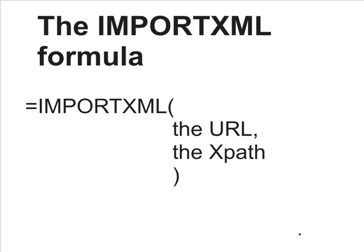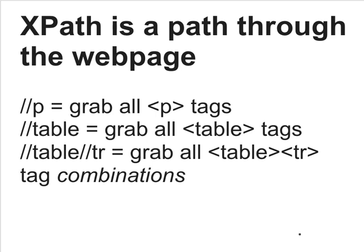The URL is relatively straightforward, but what is XPath? XPath is a path — a path through the web page. It's a way to describe where the information is that you want to scrape. For example, if I wanted to grab all of the information in each P tag, or paragraph tag, on the web page, I would use the XPath //p. That basically means grab all the P tags.